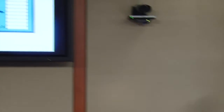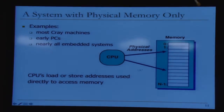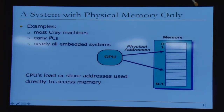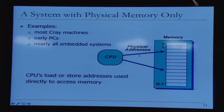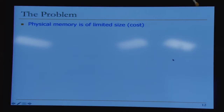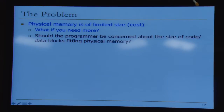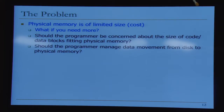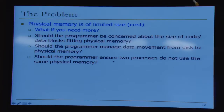In systems with physical memory only — early PCs, most Cray machines, many embedded systems — every load/store directly uses the address as a physical address. Physical memory is of limited size due to cost constraints. Key problems: should the program manage fitting code and data in physical memory? Should programmers ensure two processes don't use the same physical memory? If two different people write programs that use the same physical addresses, there's a conflict — it's not easy to handle.